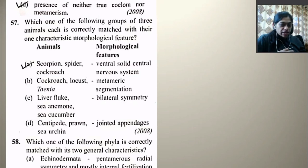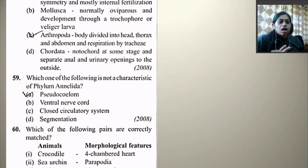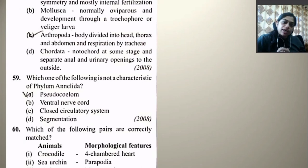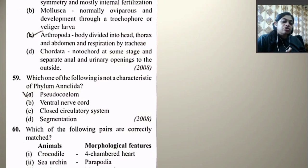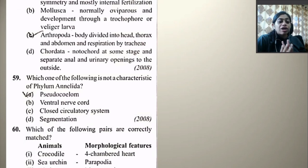Which one of the following phyla is correctly matched with its two general characteristics? Echinodermata — pentamerous radial symmetry and mostly internal fertilization. Mollusca — normally oviparous and development through trochophore or veliger larva — no. Arthropoda — body divided into head, thorax, and abdomen and respiration by trachea — this is true. Chordata — notochord at some stage and separate anal and urinary openings — not always right.